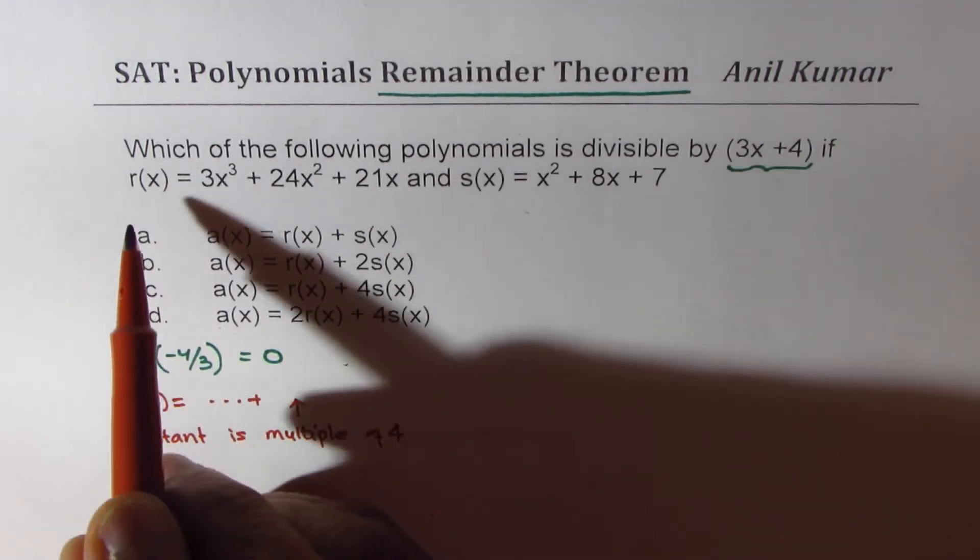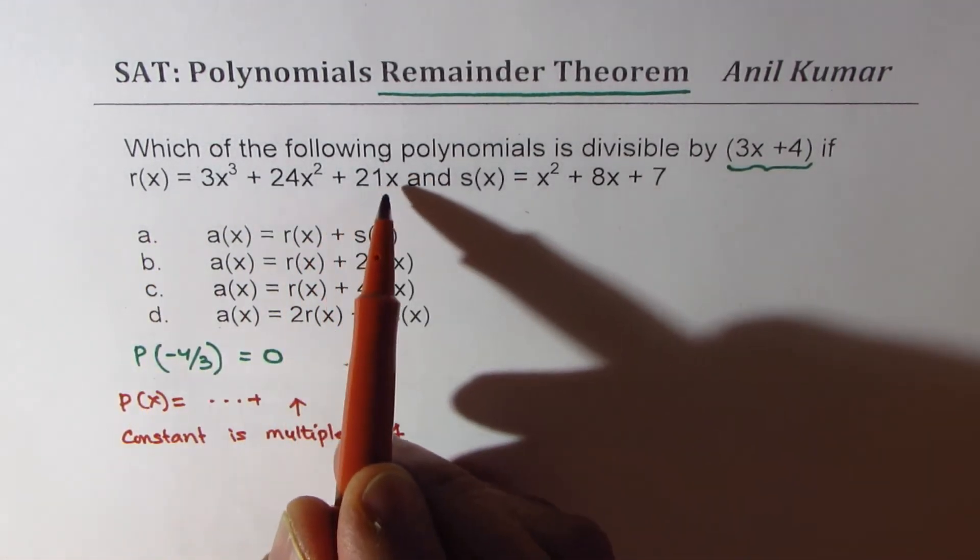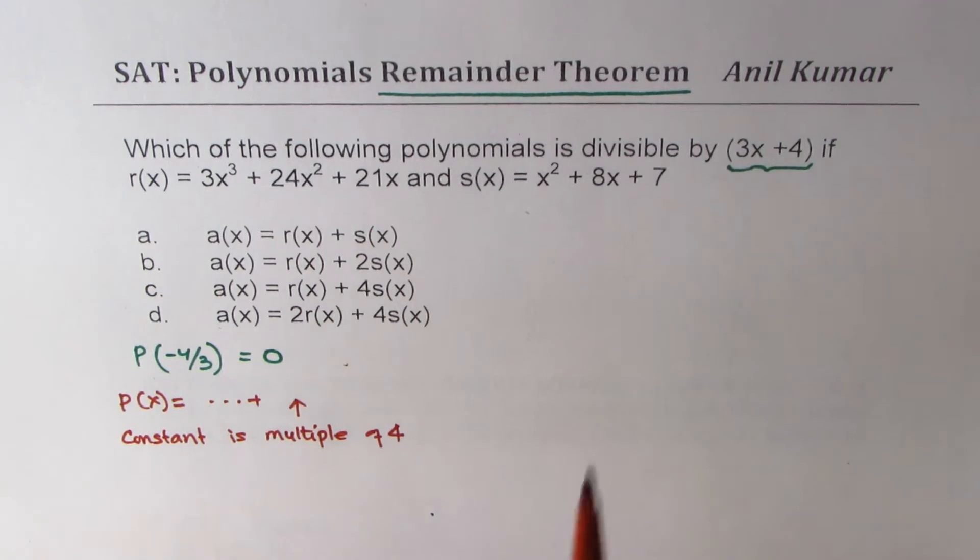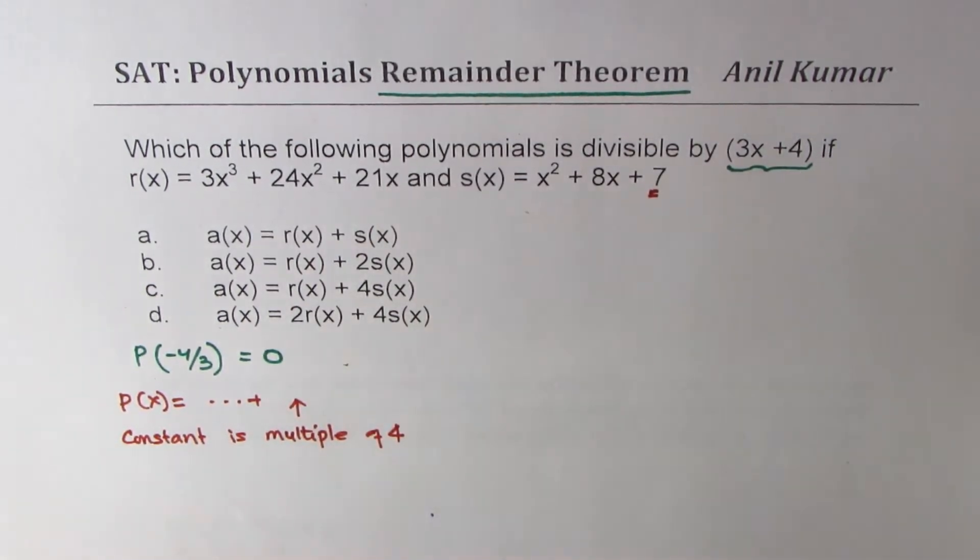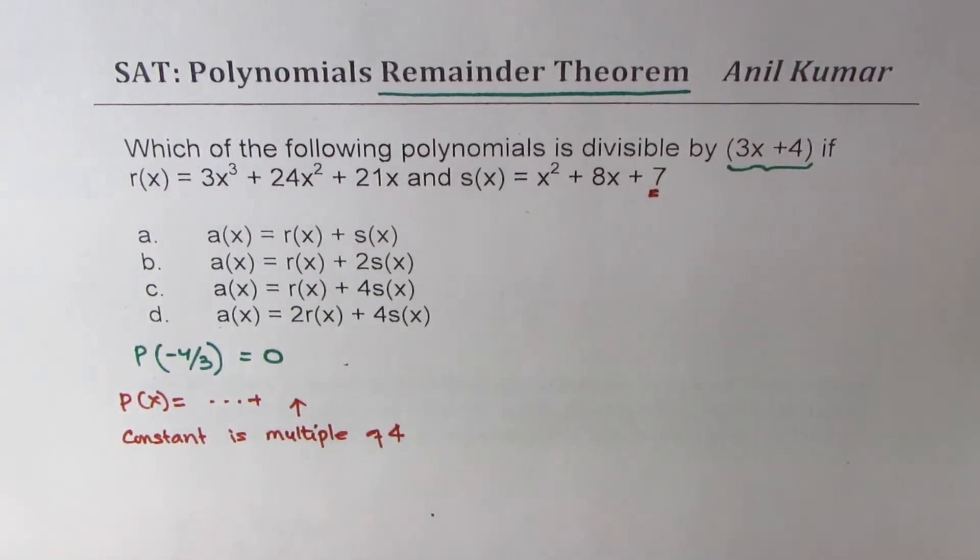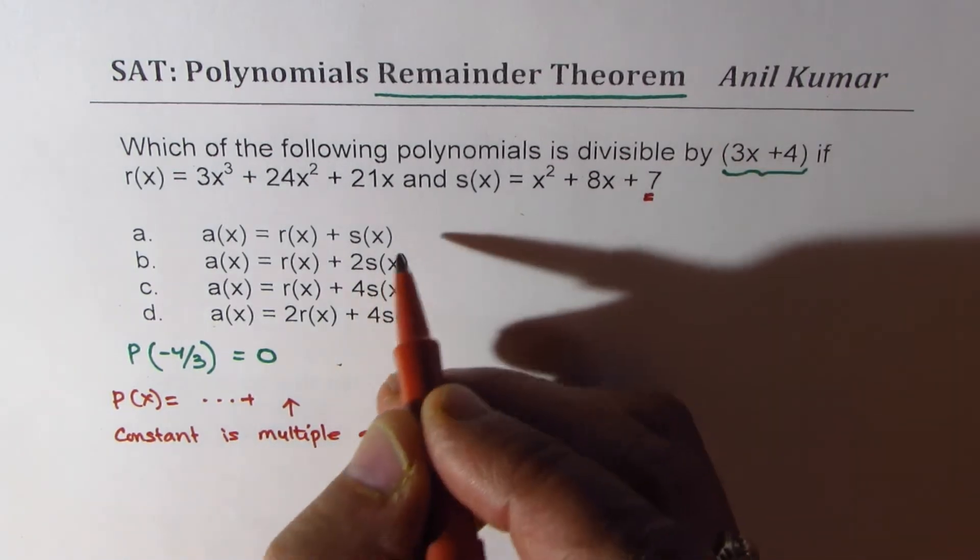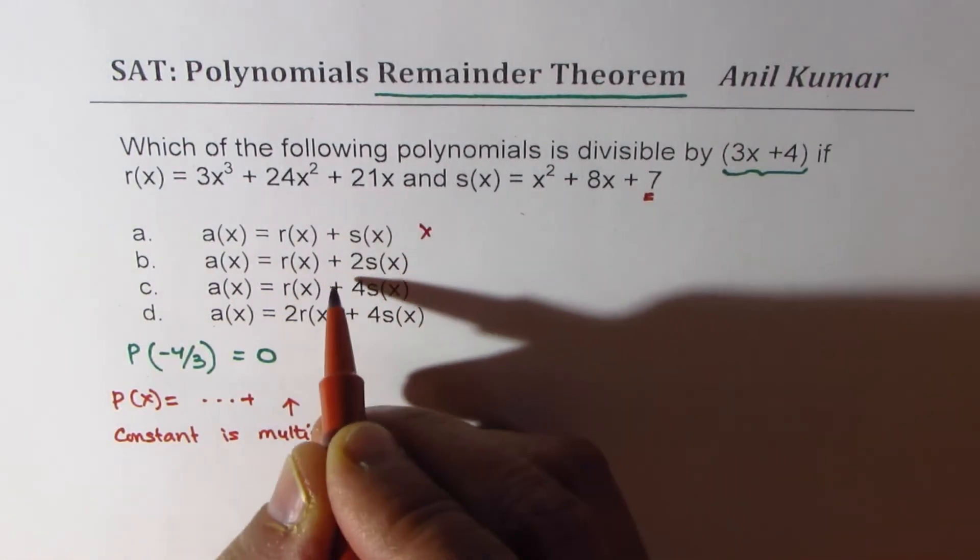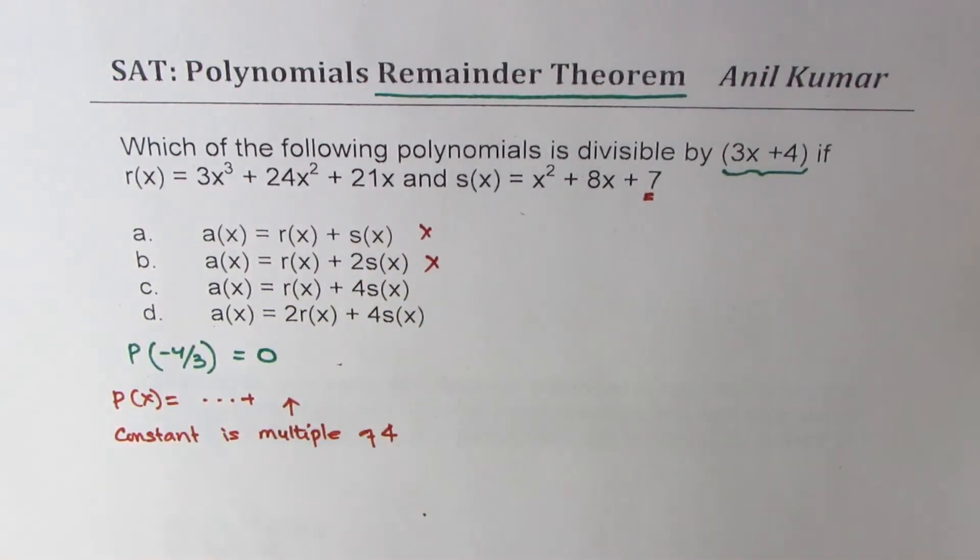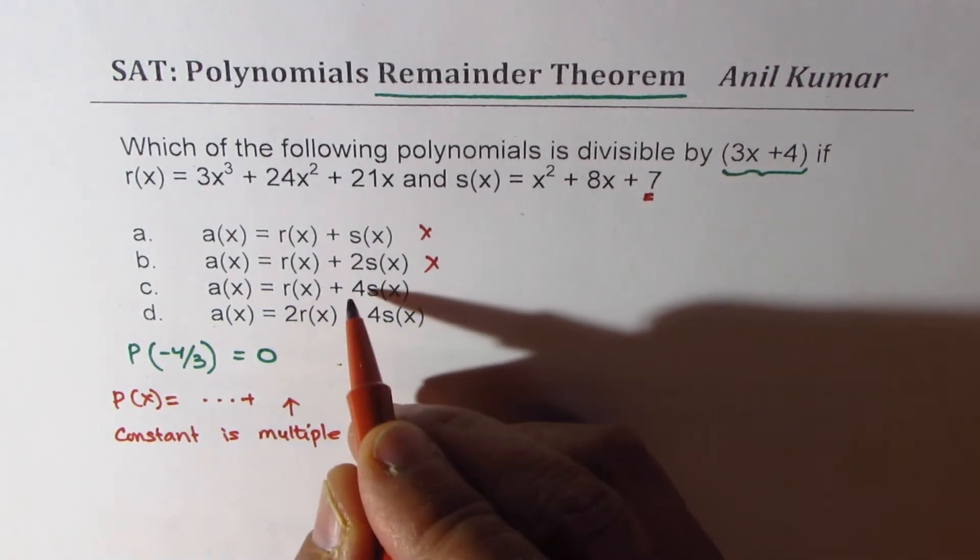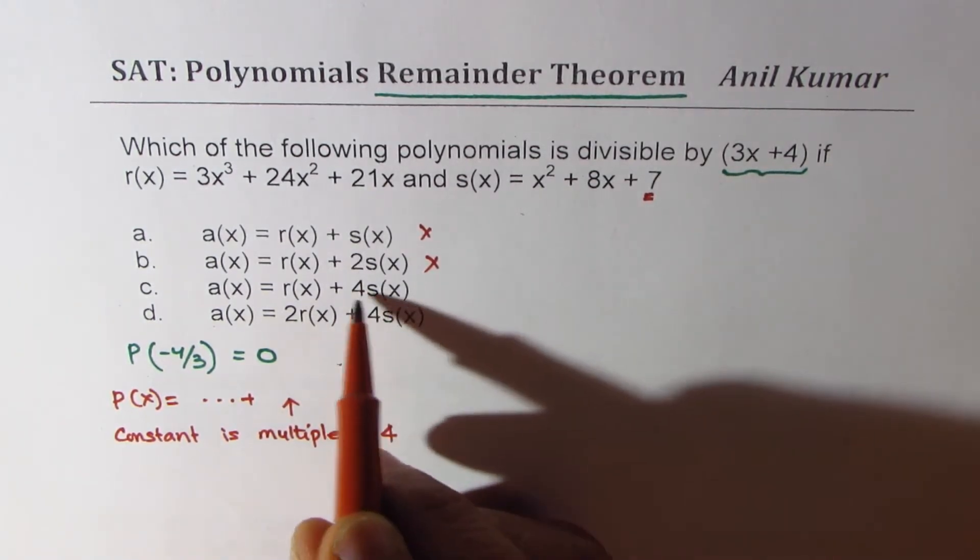Now if you observe, r(x) has 21x and s(x) has a constant term 7. 7 is not a multiple of 4, correct? And therefore, option a is not the right option. Option b is also not the right option.